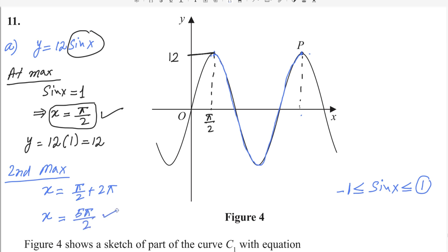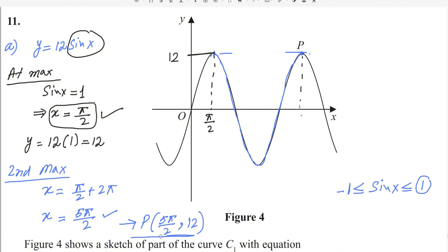This is the x-coordinate of point P. The y-coordinate will be the same: 12. Therefore, the coordinates of P are (5π/2, 12). This is the answer for the first part.